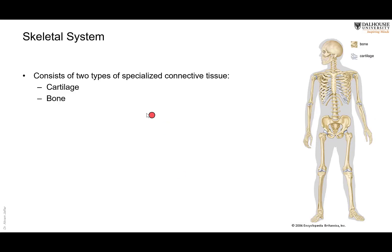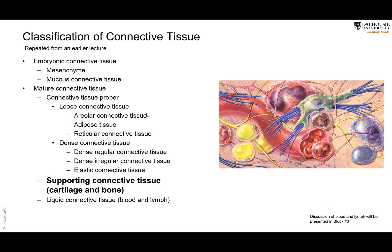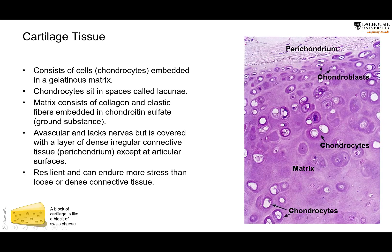The skeletal system consists of two types of connective tissue: cartilage and bone. Connective tissue is either embryonic or mature. Mature connective tissue includes connective tissue proper, loose connective tissue, dense connective tissue, and supporting connective tissue, which is cartilage and bone. There is also liquid connective tissue — blood and lymph. Today we are doing the supporting connective tissue: the cartilage.